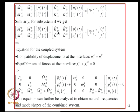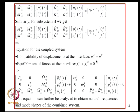Similarly for subsystem B, a similar equation is derived independently. Then, imposing the compatibility relations and equilibrium equation, we get the combined equation for the coupled system. The state vector for the combined system consists of normal modes of subsystem A, normal modes of subsystem B in the fixed interface format, and the coupling degrees of freedom—which are equal by the compatibility requirement.